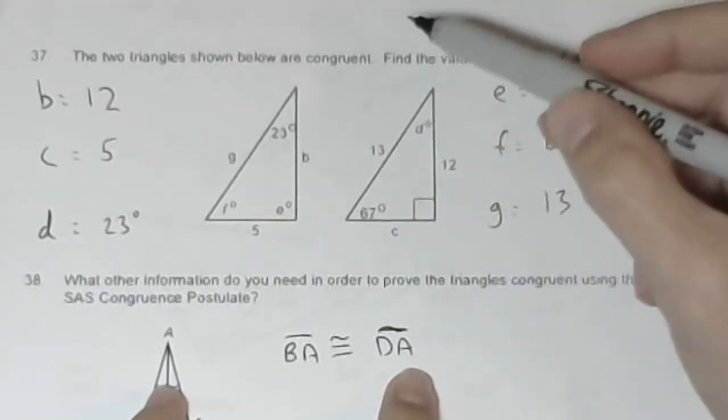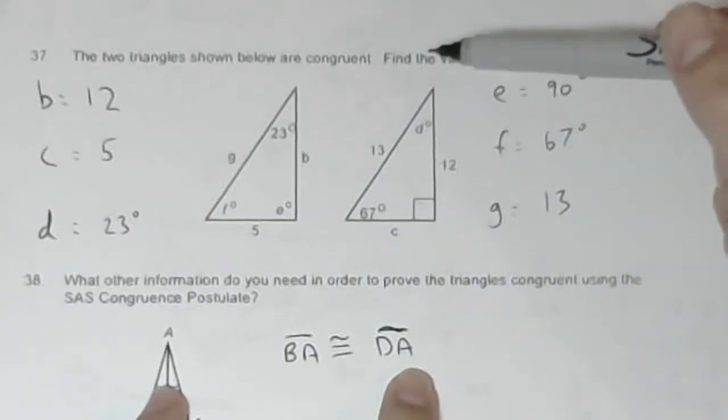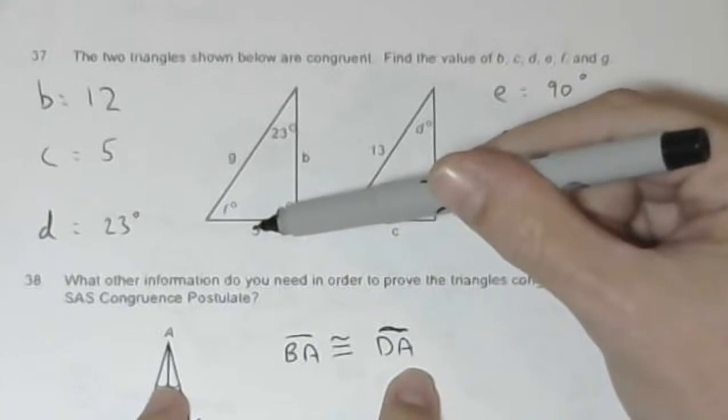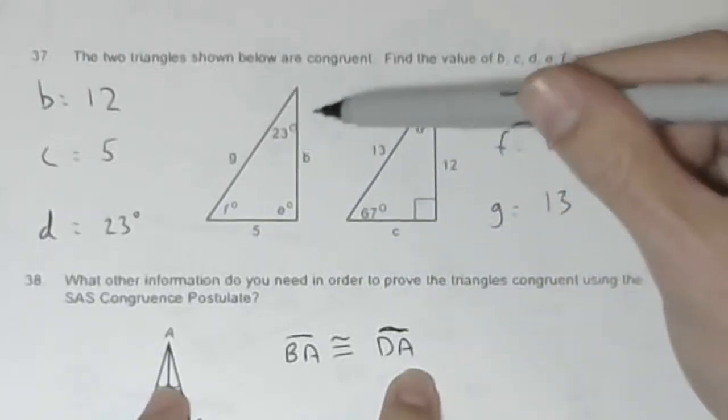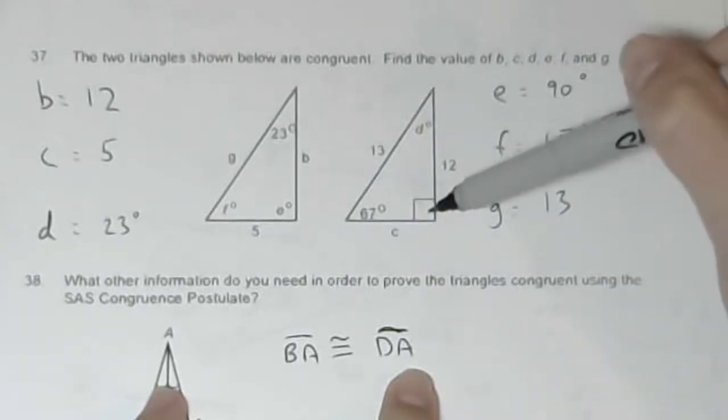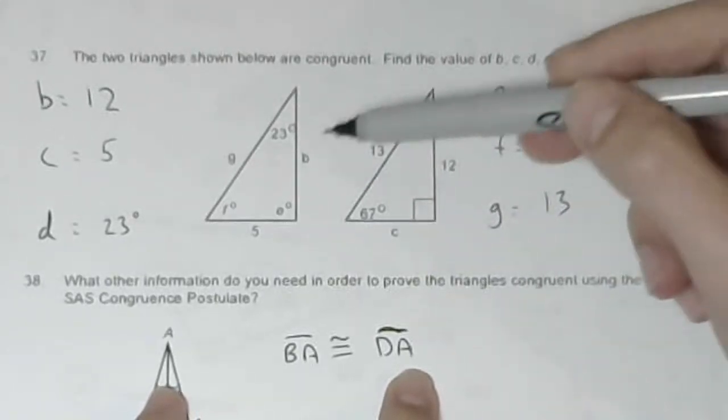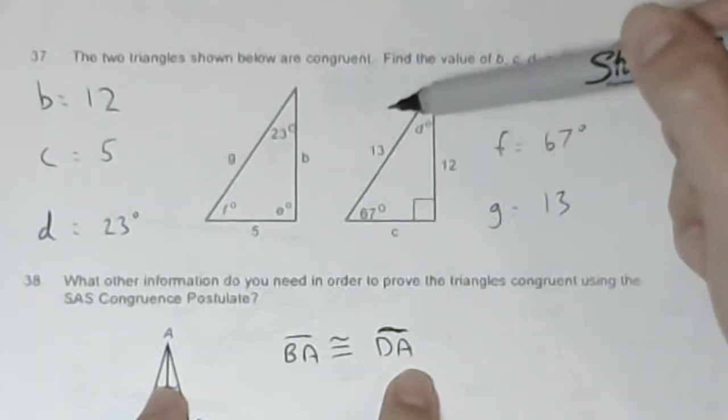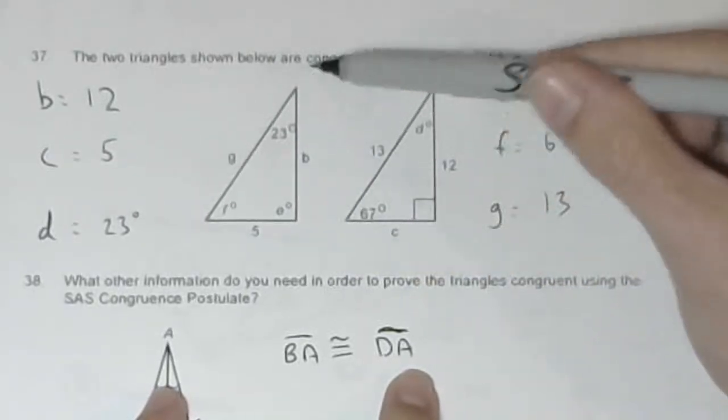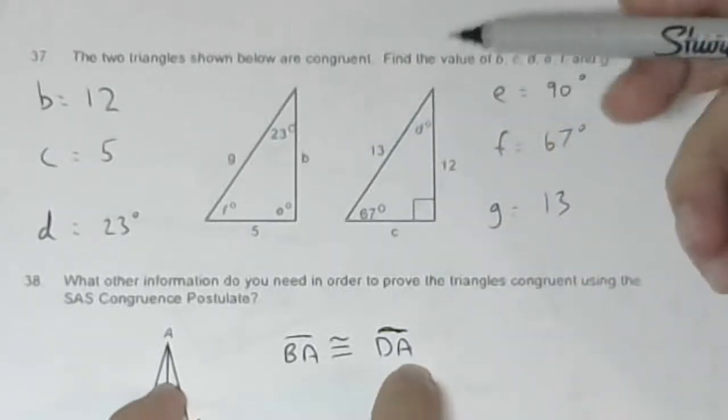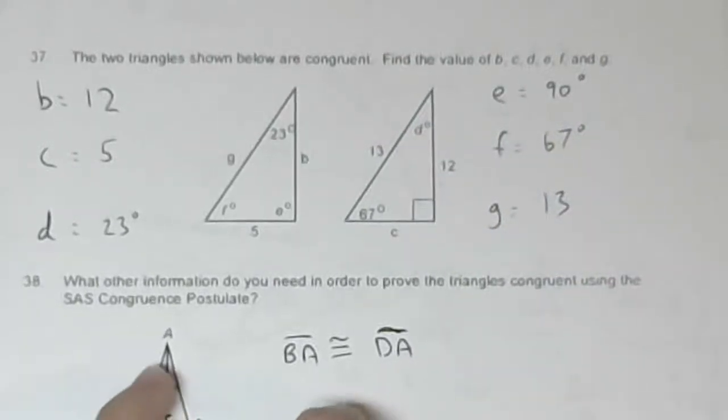b is this segment 12, c is this segment 5, d is this angle 23 degrees, e is the right angle 90 degrees, f corresponds to this angle 67, and g is the hypotenuse 13. We get a 5, 12, 13 right triangle.